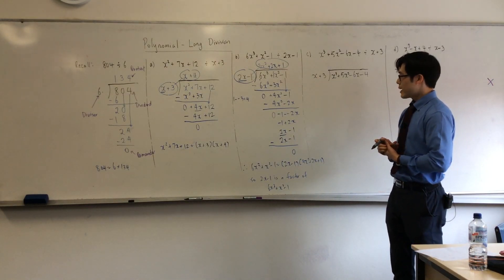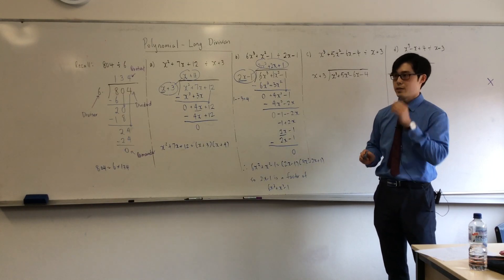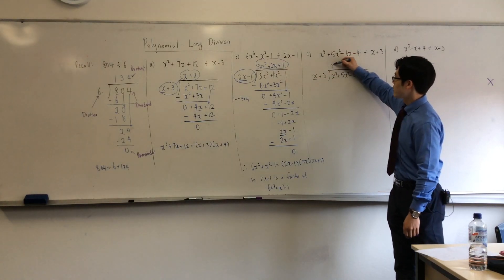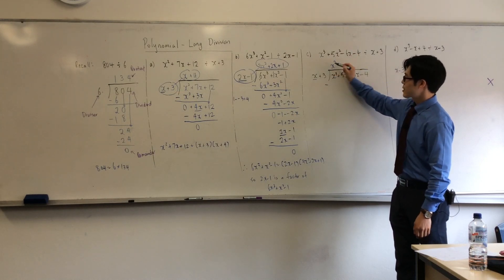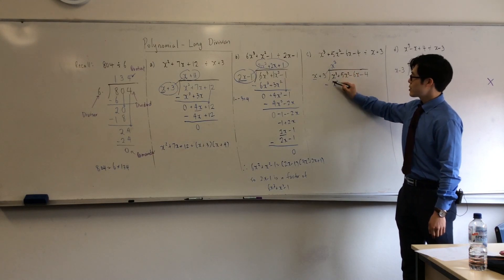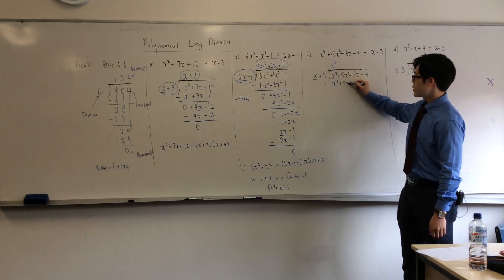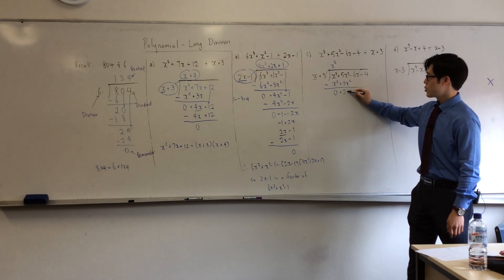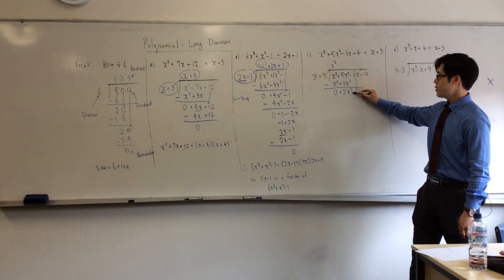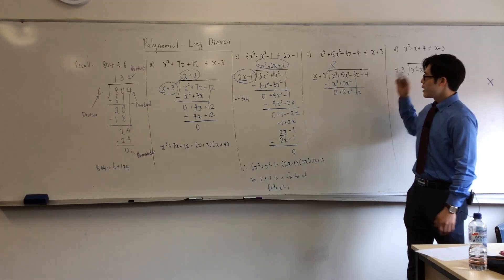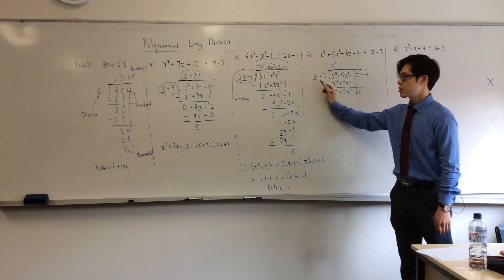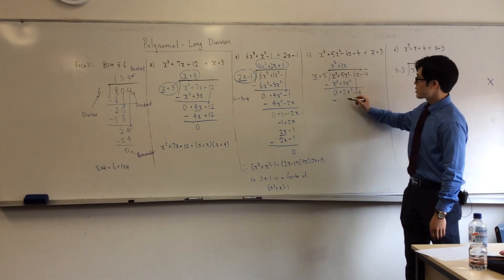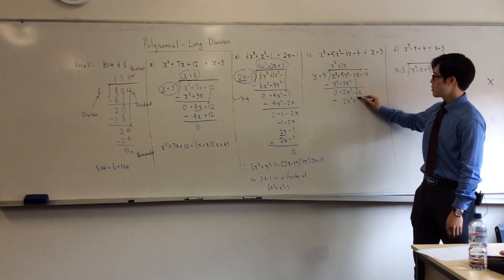Now we're going to do polynomial division where there is a remainder — where the remainder is not 0. Pay attention, same steps. How many x's go into x cubed? X squared. Take away as usual: x times x squared is x cubed. Times it with the second term: 3 times x squared is 3x squared. This is 0. 5 minus 3 is 2x squared. After this, bring one term down — one at a time. Ask yourself the same question: how many x's go into 2x squared? 2x. So minus x times 2x is 2x squared, and 3 times 2x is 6x.